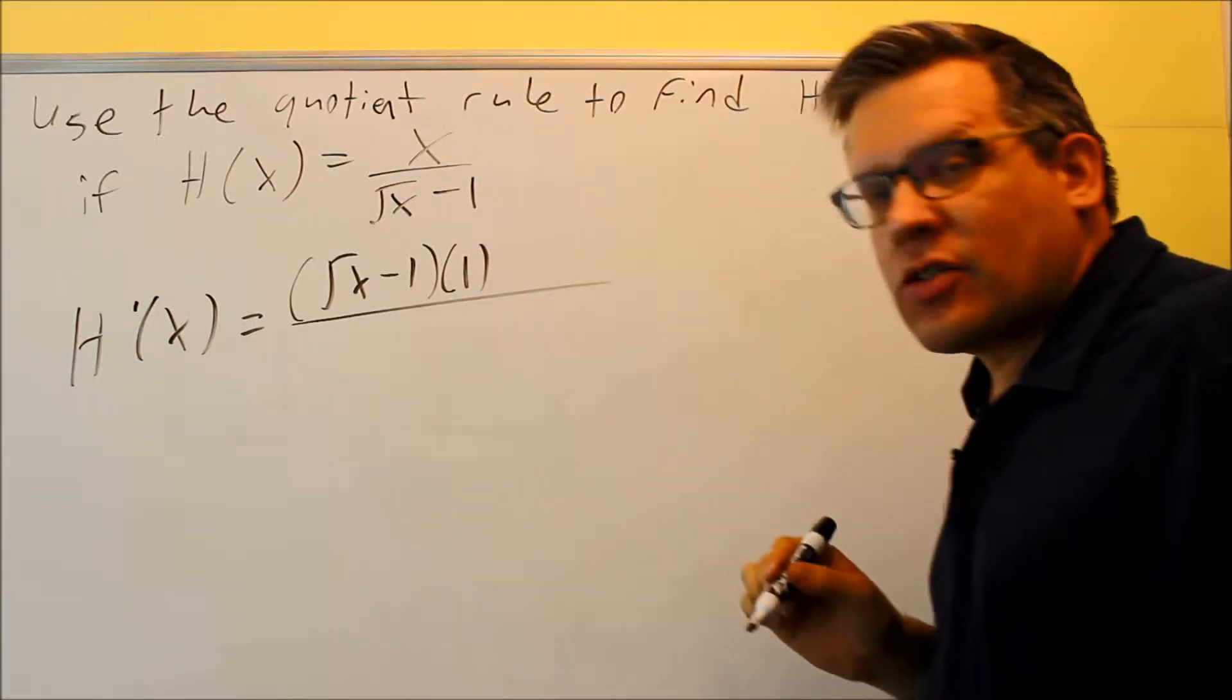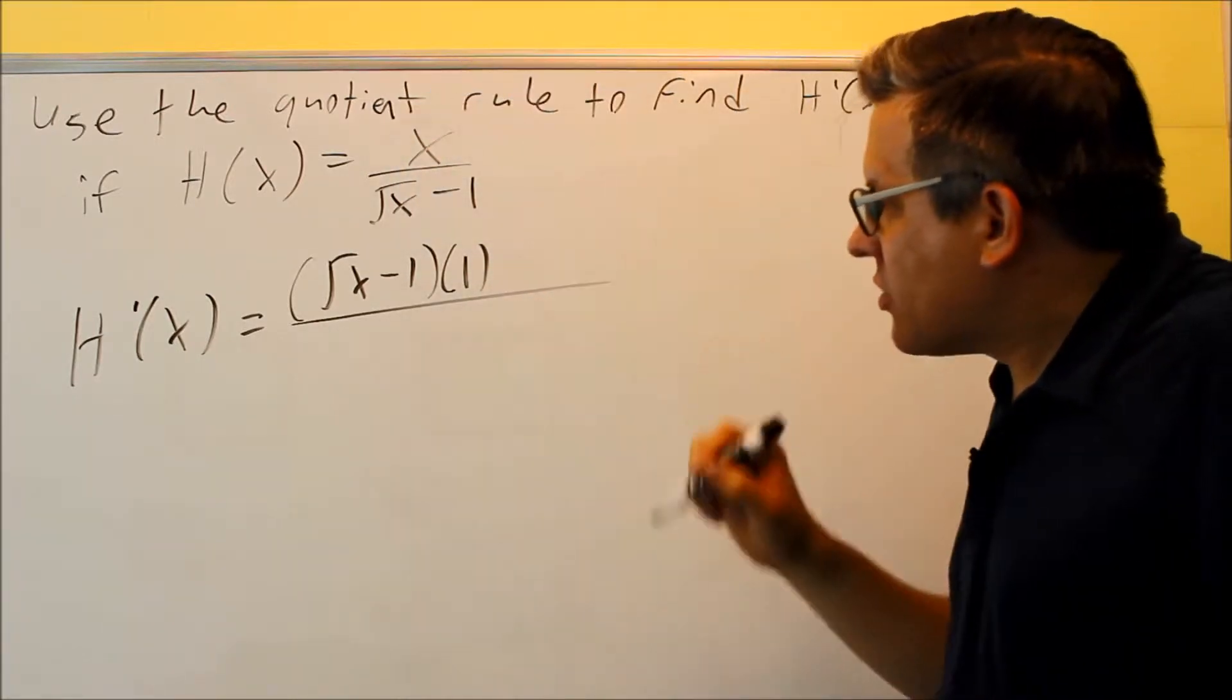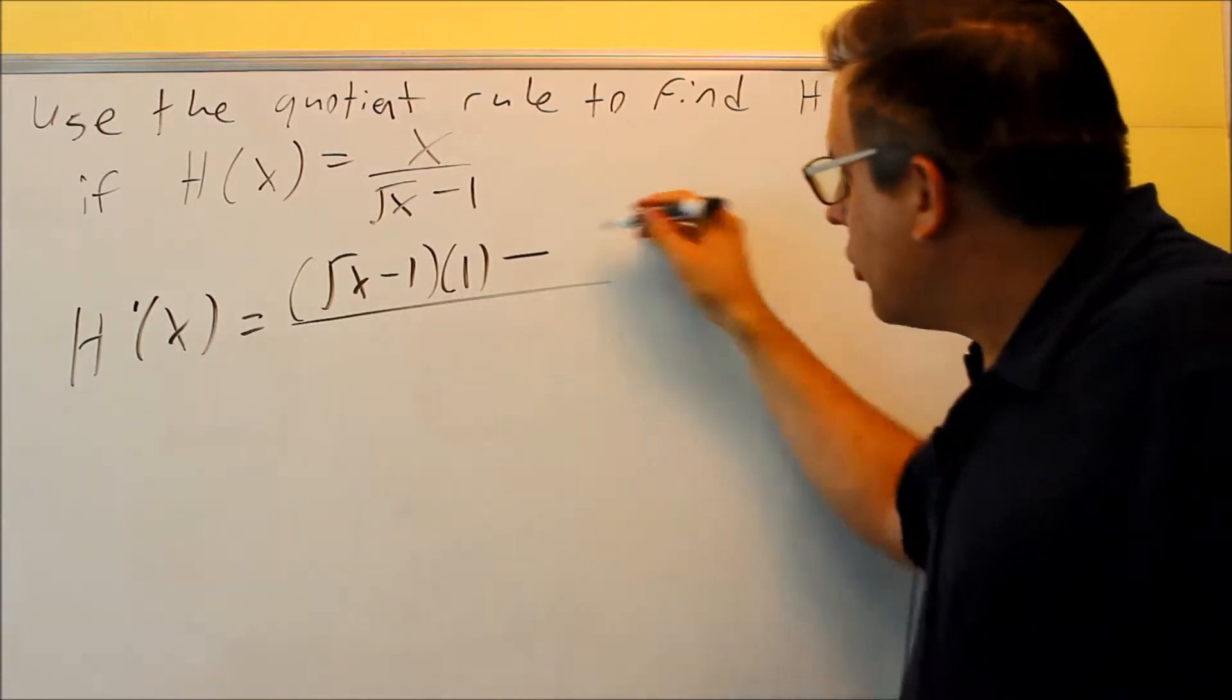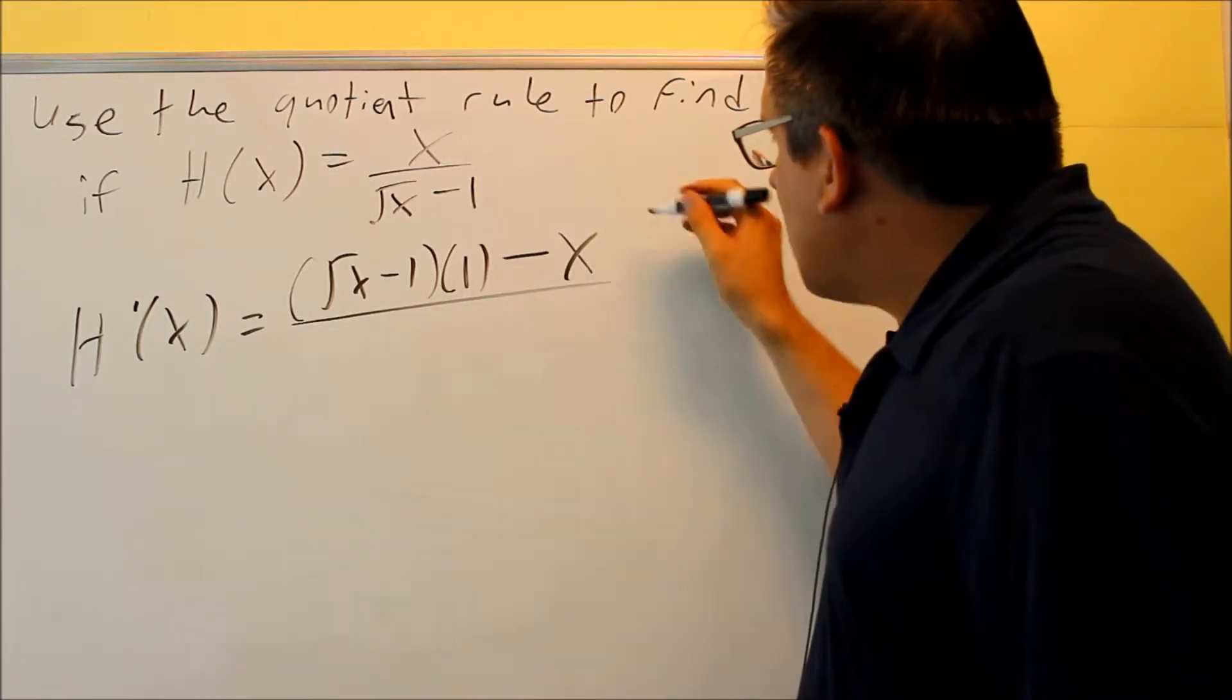Because there's a constant in front of that, that's a 1x, so your derivative is always a constant. Minus the top, which is x, times the derivative of the bottom.